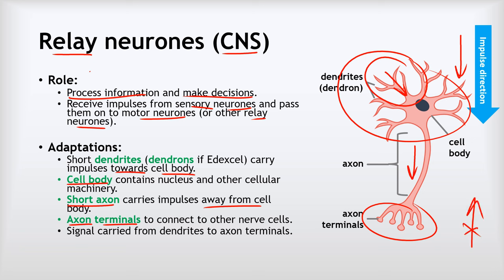It's also worth noting that there is no myelin sheath on the relay neuron. On the sensory neuron we saw both the long axon and the long dendron had the myelin sheath, but there is none here — none of those little blobby, sausage-like structures. The reason for that is simply because the axon is so much shorter.